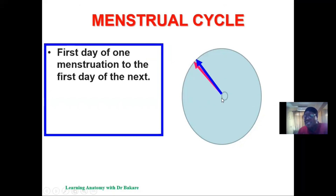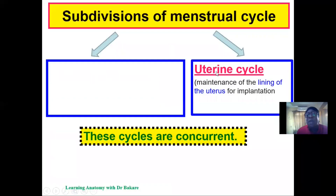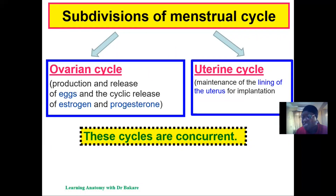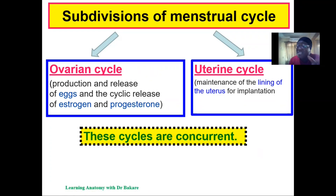The menstrual cycle is a cycle of events that occurs from the first day of menstruation to the first day of the next menstruation. This cycle tends to average 28 days. Within the menstrual cycle we have the ovarian cycle and the uterine cycle. The ovarian cycle involves events within the ovary, while the uterine cycle involves events within the uterus — and they occur concurrently.